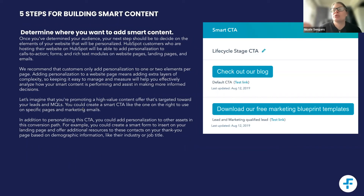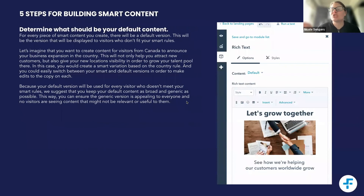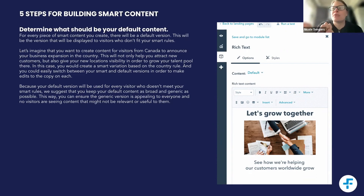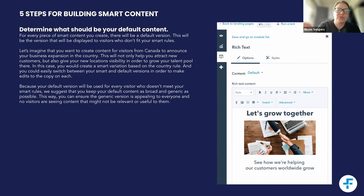Before you start running off in different directions personalizing everything, start with the default. What is that default piece of content that's going to go out to everybody? Then think about personalizing the journey — who is the default aimed at, what is the generic going to look like? That default version is very important because anyone who falls outside of your smart rules is going to see it, and if it's based on a landing page, so is Google. So you need to make it relevant to both of those audiences.